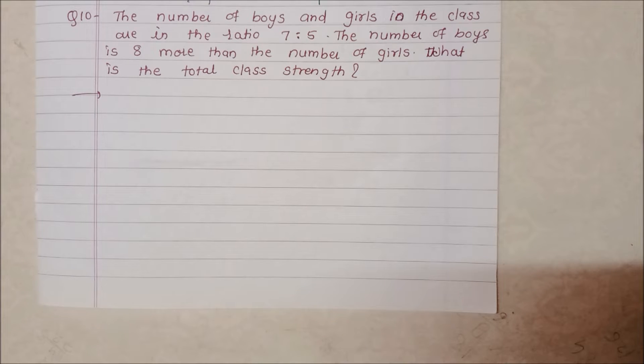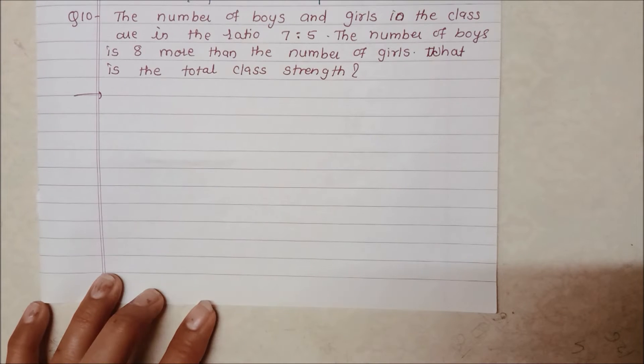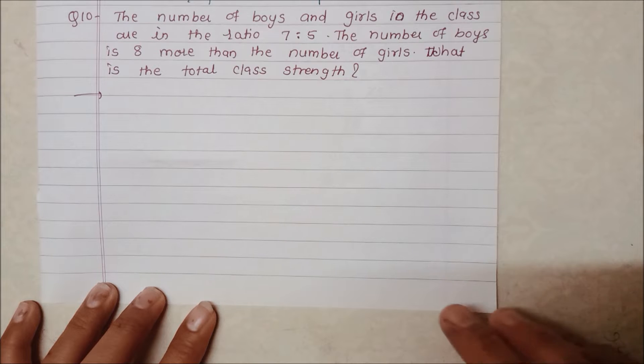The number of boys and girls in the class are in the ratio of 7 is to 5. Boys and girls are in the ratio 7 is to 5, in the ratio of boys and girls is 7 for boys and 5 for girls.